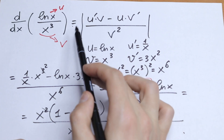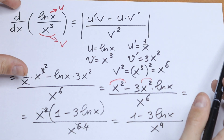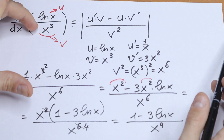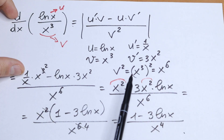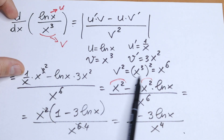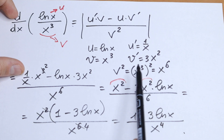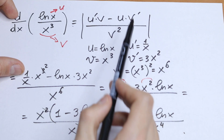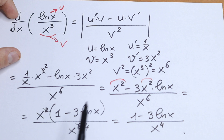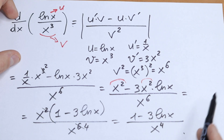Learn this formula — it's a really useful one for finding the derivative of a fraction. The steps are: identify u and v, find their derivatives, write out v squared — don't forget it — then plug all of these elements into the formula. Two simplification steps and you have your answer.